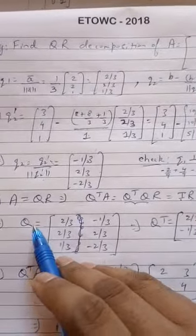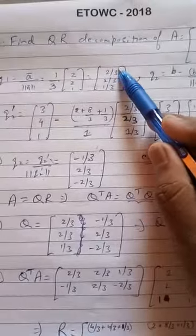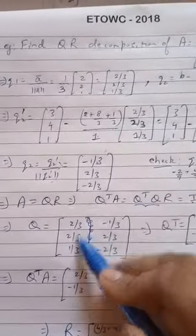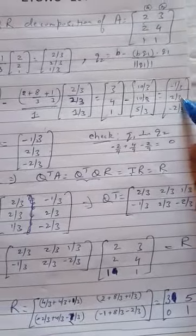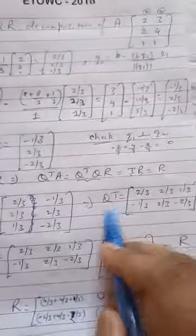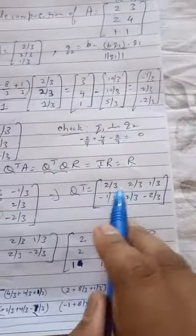So Q, we first write Q, which is nothing but the two orthonormal vectors which we have found. So the first column will be 2 by 3, 2 by 3, 1 by 3. And the second column will be minus 1 by 3, 2 by 3, minus 2 by 3. So now we find the transpose of Q. So this column becomes the first row and this column becomes the second row. This will be Q transpose.